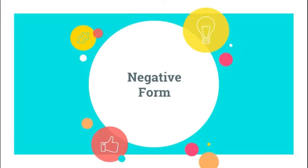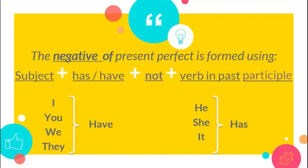The negative of present perfect is formed using subject plus has or have plus not plus verb in past participle. Just remember, for the subject like I, you, we, and they, we use the auxiliary have, and for the subject like he, she, and it, we use the auxiliary has.